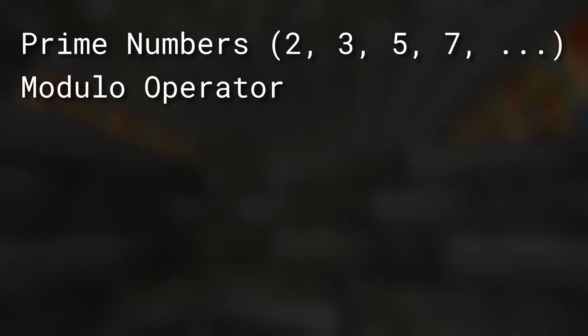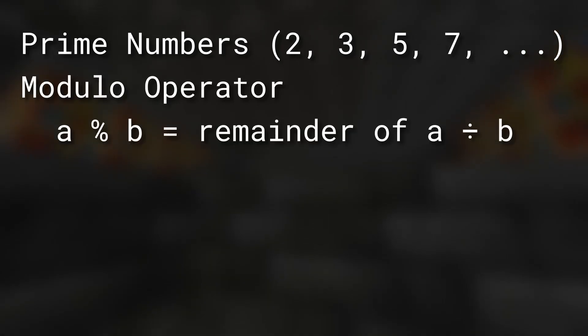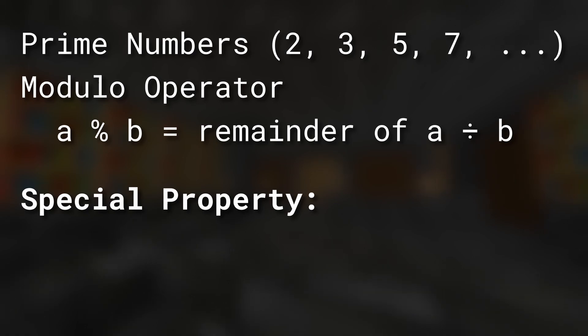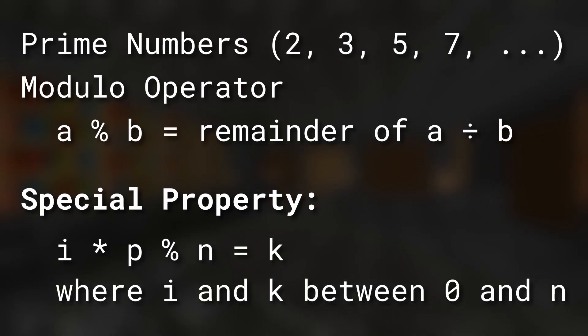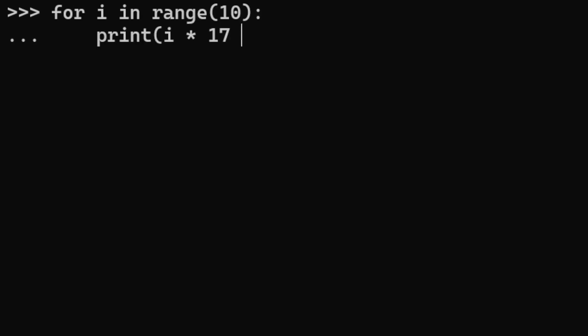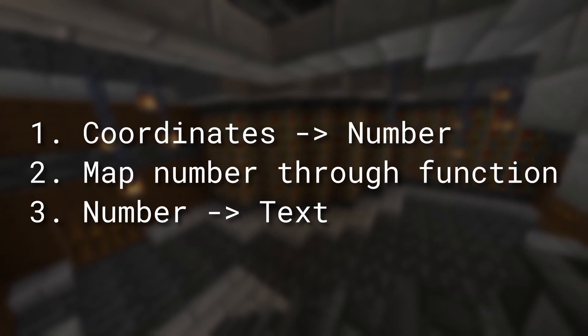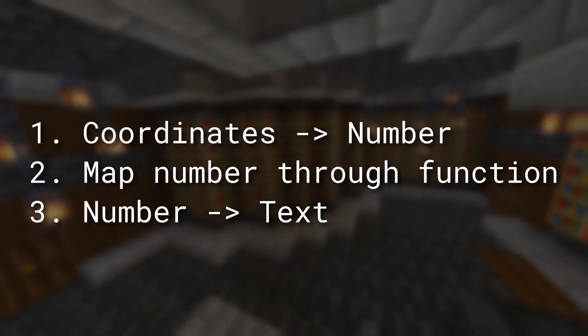I asked this question to some friends, and one friend told me about a special property of prime numbers and the modulo operator — where a modulo b means the remainder when dividing a by b. The property is: if you take a number between 0 and n, multiply it by any prime number, then modulo it by n, you'll end up with a seemingly random number between 0 and n. And what's incredible is that if you try this for all numbers 0 to n, you'll find that no duplicate numbers are output. We can convert the coordinates in the world to a number, plug it into this function, and then convert the resulting number to a page of text.